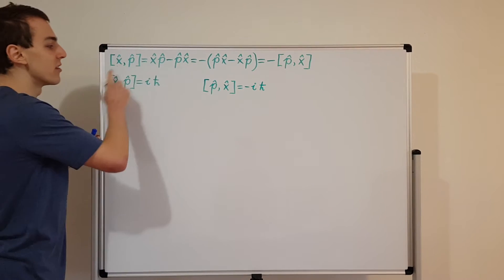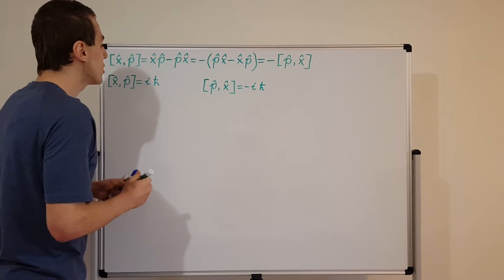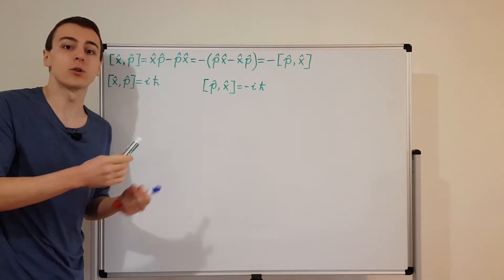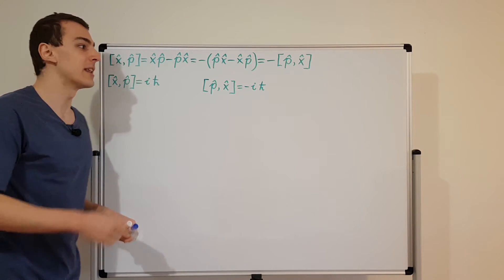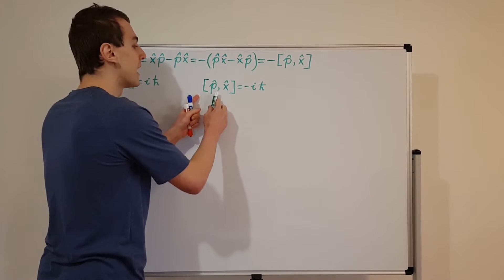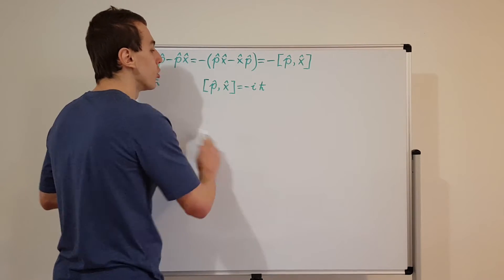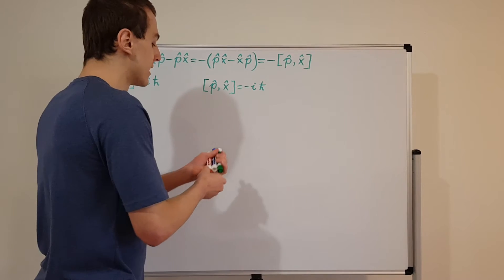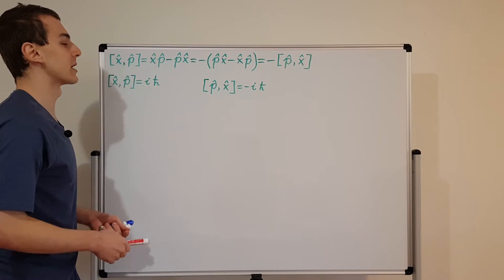From this anti-symmetry relationship, we can also conclude that the commutator of momentum with position equals minus iℏ. If we change the order inside the commutator, we introduce a minus sign. So this is the canonical commutation relation, and we generalized it to three dimensions with the Kronecker delta symbol in the previous video. In this video, I want to take the commutator of momentum and a function of position.